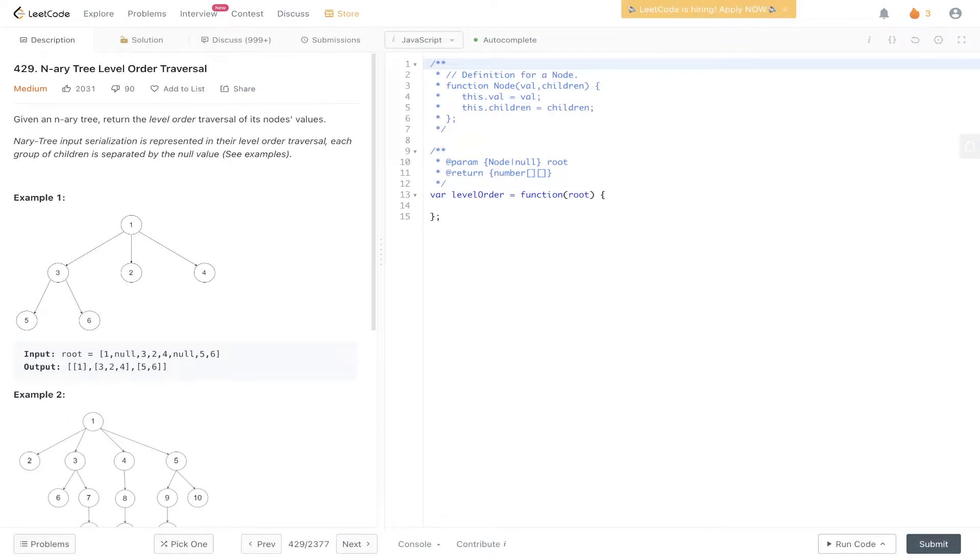Welcome back to Algo.js. Today's question is LeetCode 429: N-ary Tree Level Order Traversal. Given an N-ary tree, return the level order traversal of its node's values. N-ary tree input serialization is represented in their level order traversal. Each group of children is separated by the null value. In example one, we have this N-ary tree.